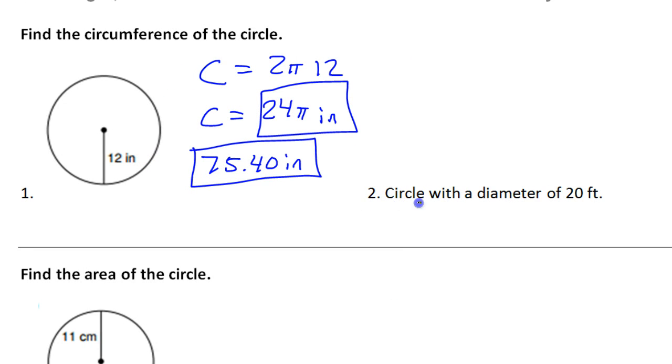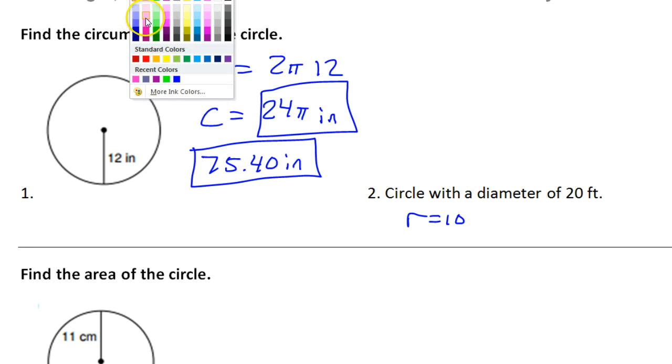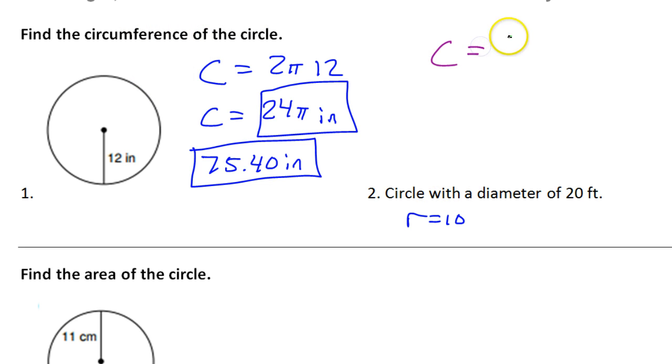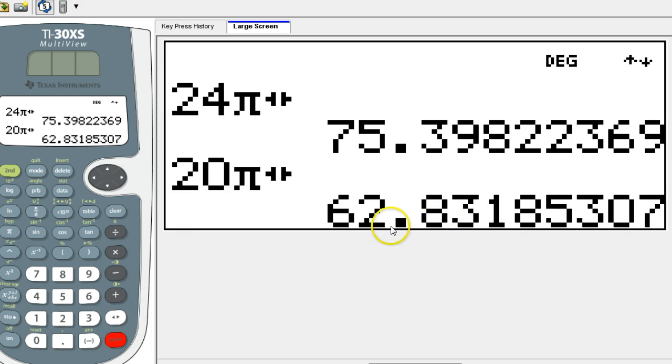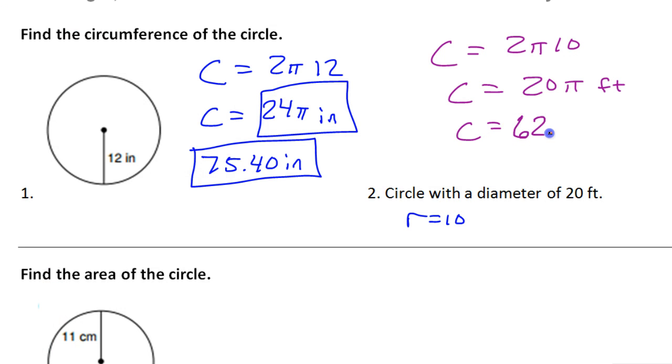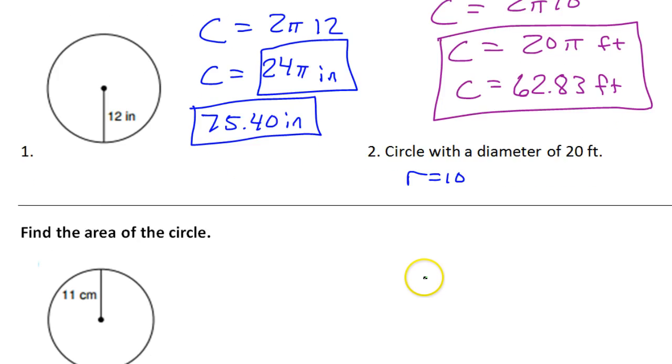Number two, a circle with diameter of 20 feet. Well, if the diameter is 20, that means the radius is 10. So, if the radius is 10, then that means the circumference is 2π times 10. So, the circumference is 20π, or as a decimal, don't forget the units, feet. So 20π, we'll have to toggle it, 62.83.